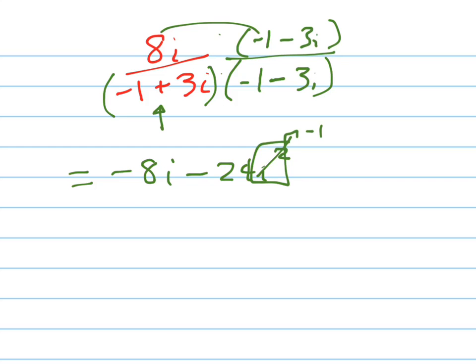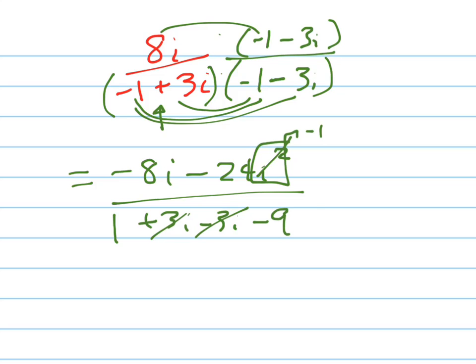And then the bottom, watch how cool this is, it becomes 1. I'm foiling first. Outside is positive 3i. Inside is negative 3i. Hey, that's cool. And last is negative 9i squared. Classic. Now what does i squared turn into, you ask? Positive 9. It turns into negative 1.